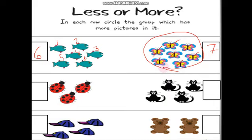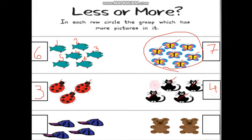Now the second example. We have ladybirds and cats. Let's count the ladybirds: one, two, three. We write three. Now we count the cats: one, two, three, four. We are going to circle the group which has more. Who is more — the ladybirds or the cats? Very good! The cats are more. So we circle the cats.